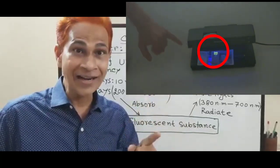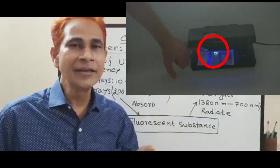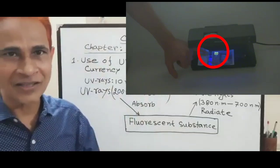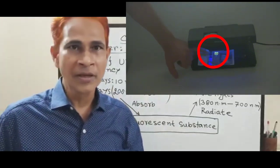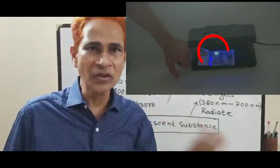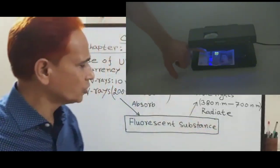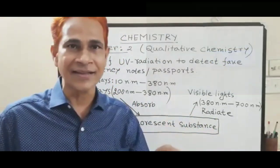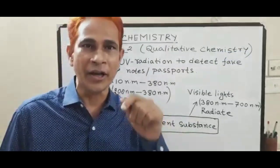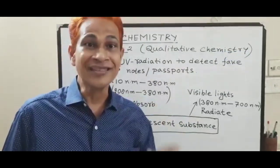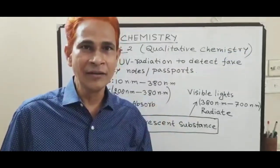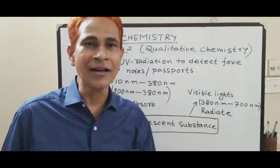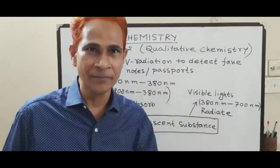But in a fake currency note or passport, it is not possible to use the fluorescent substance as a security point. That is why they will not show any colour under UV ray.